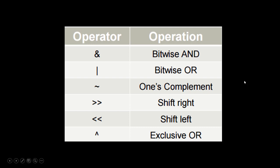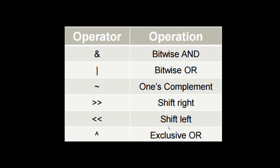Here is a table showing how Bitwise Operators can be manipulated with different types of operations. We have AND, OR, one's complement, shift right, shift left, and exclusive OR. I'm going to be going through each of these with examples of how the bits change.